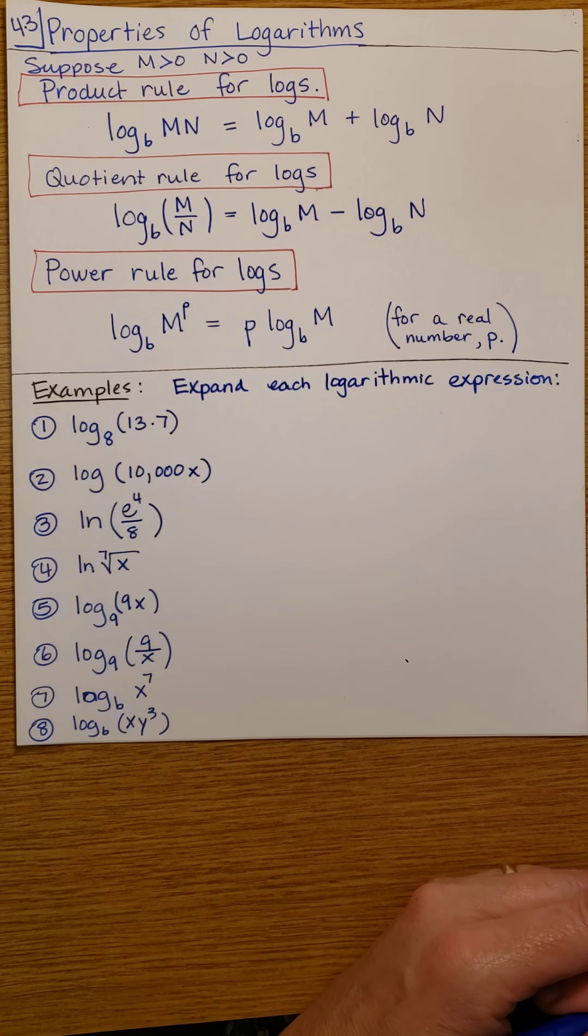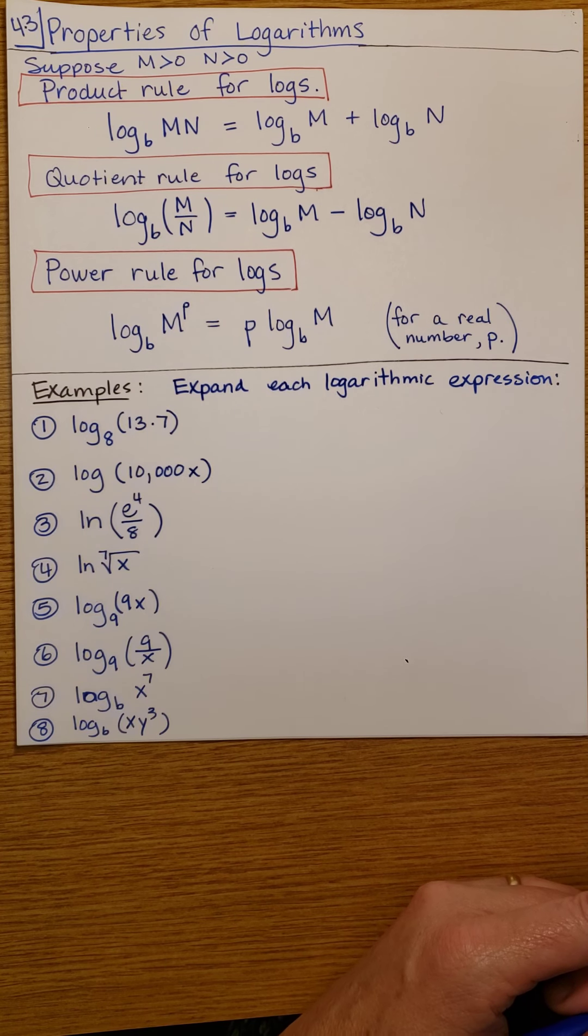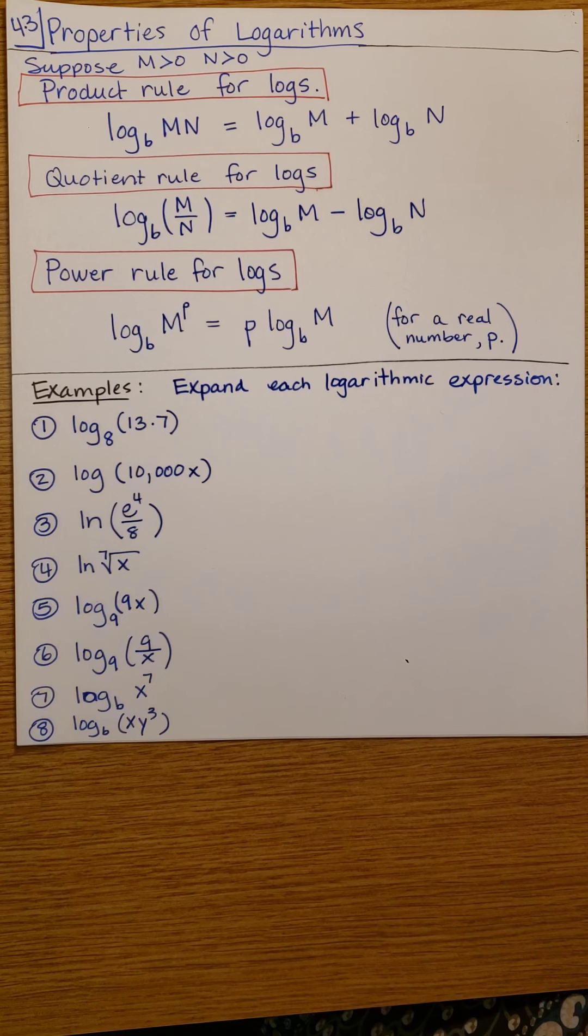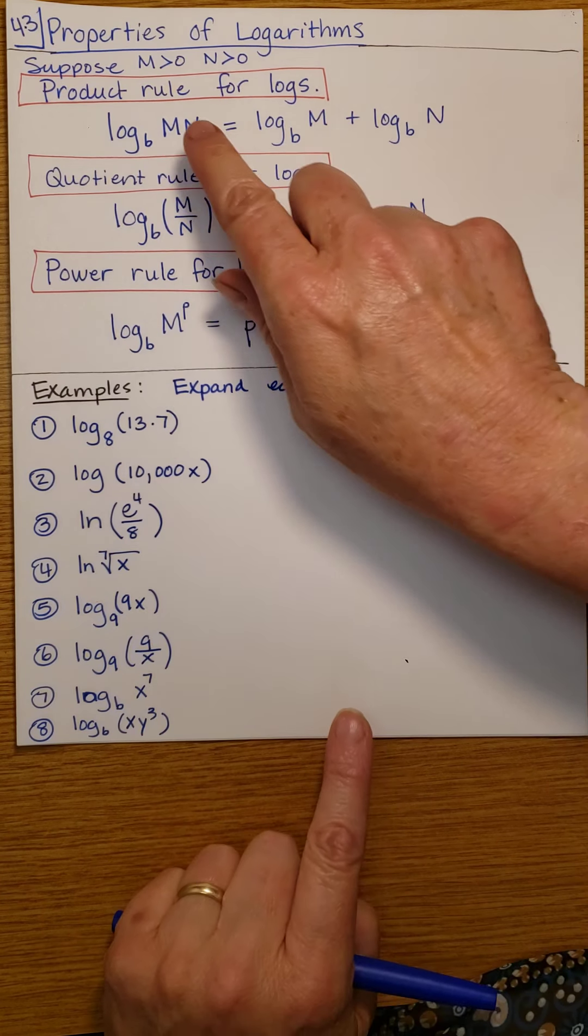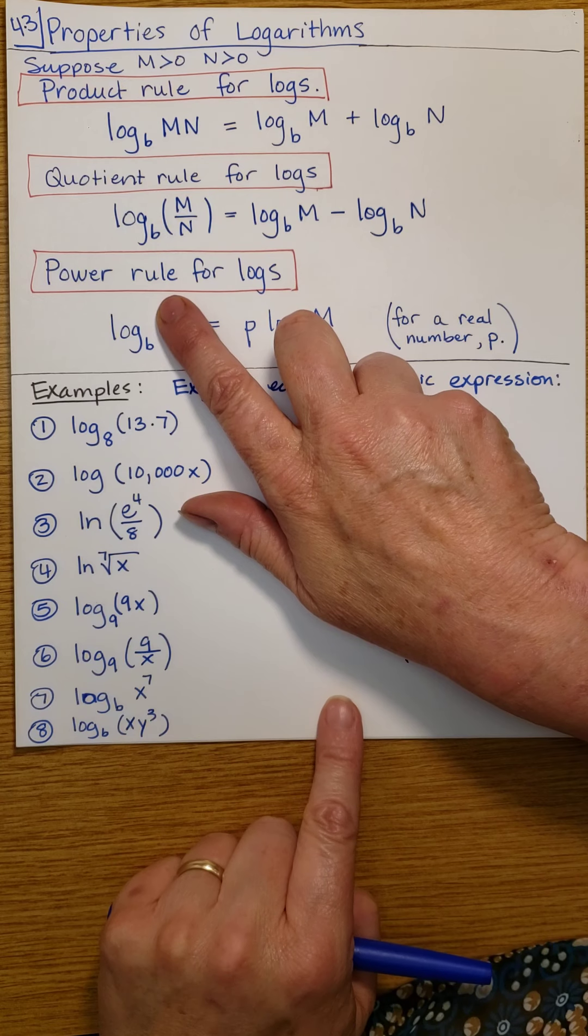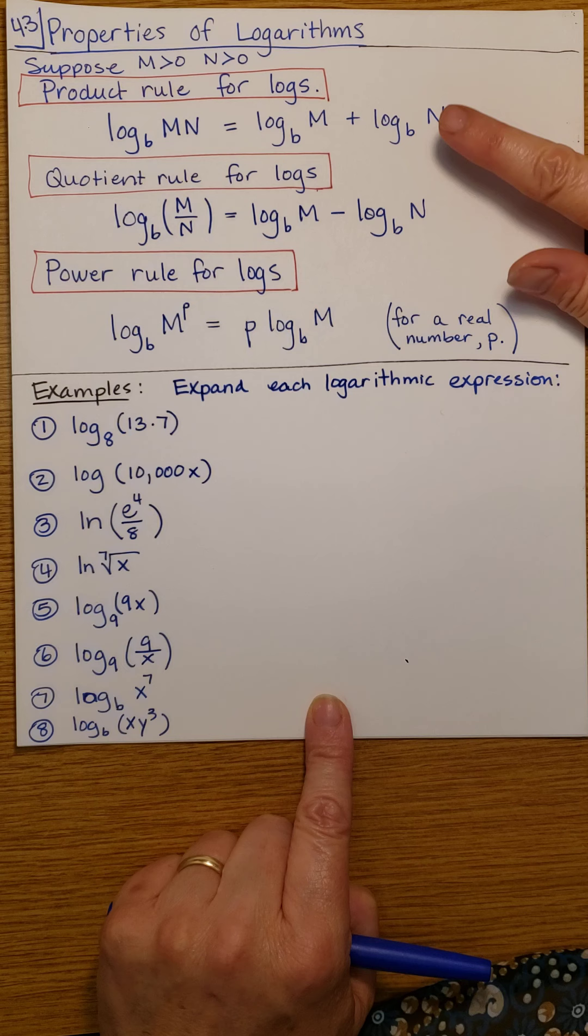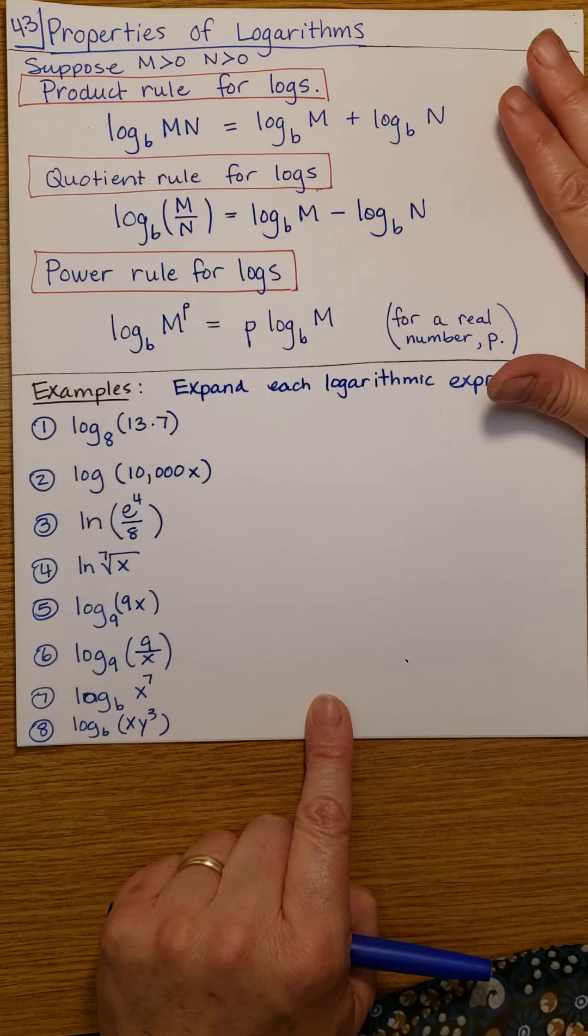We discussed some basic properties of logarithms in section 4.2, but our focus here is going to be on three properties in particular called the product rule, the quotient rule, and the power rule. And I want to remind you that your exams are going to be open note and open textbook, so you may just want to jot these properties down for when you go to take the exam to have those handy.